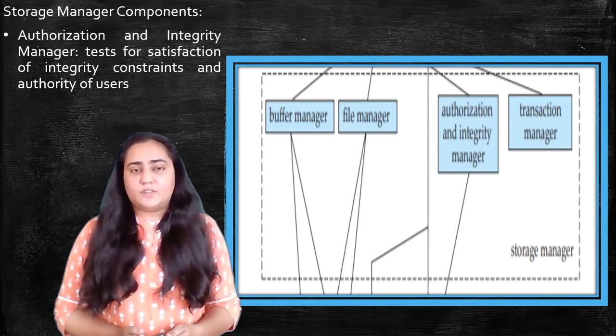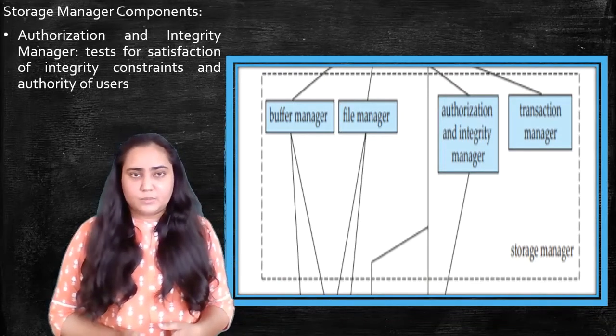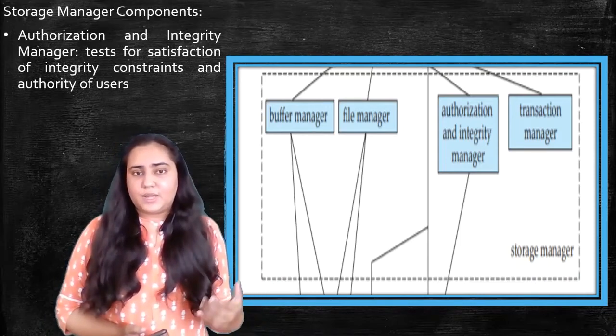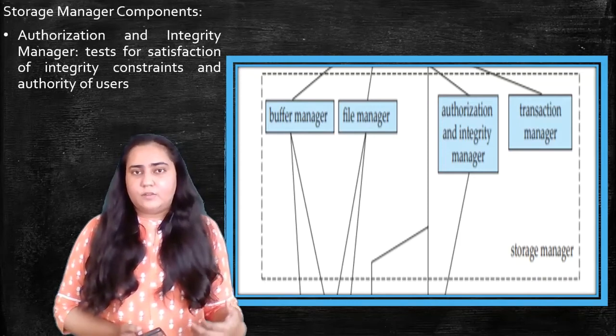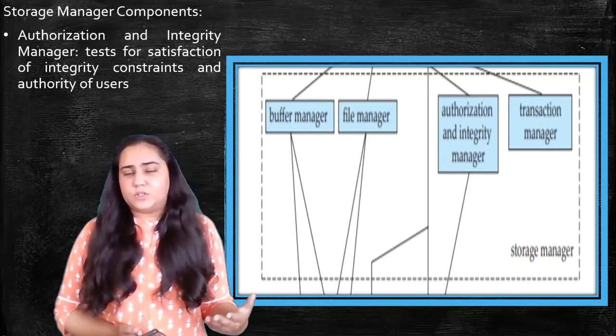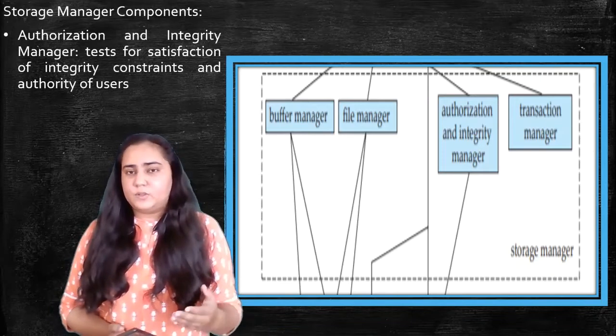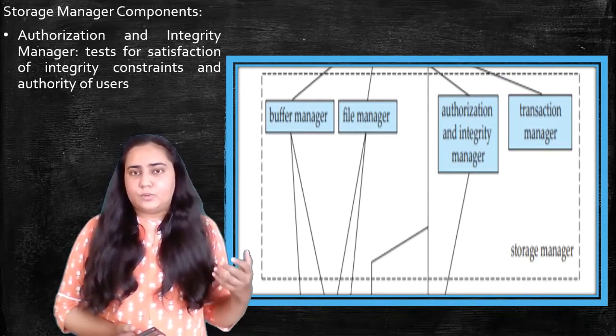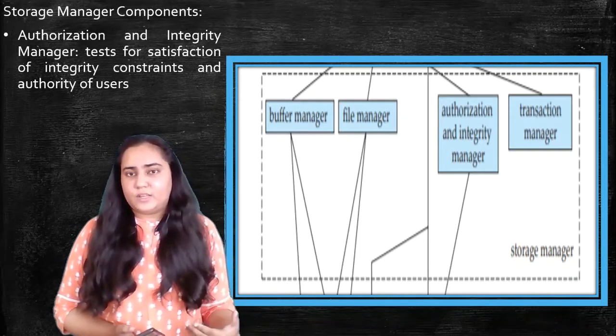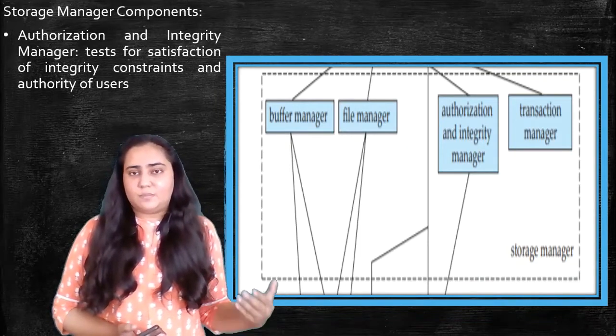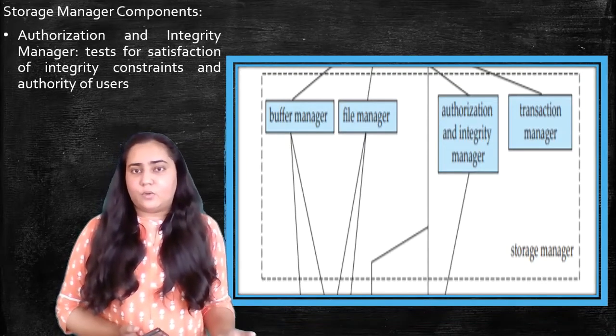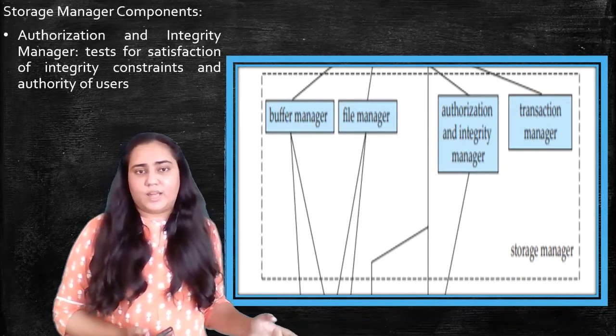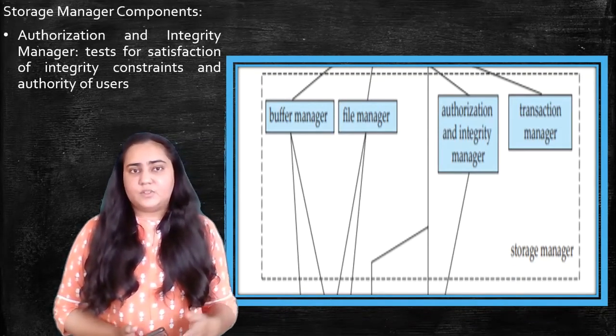The next thing we have is authorization manager. Authorization manager checks if you are actually authorized to access what you are trying to access. For example, if you are a manager, you will have more access to data than a person who is just a simple clerk in the office. There has to be some authorization process wherein you enter your username and password and the system can know that this is exactly the person who is supposed to access this data.